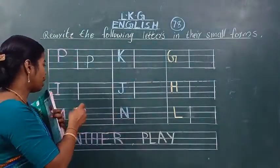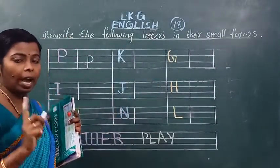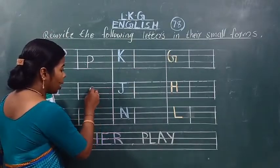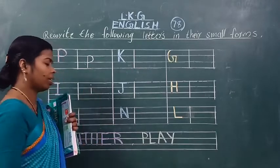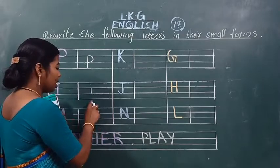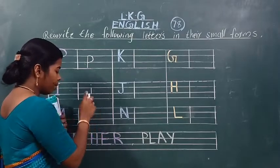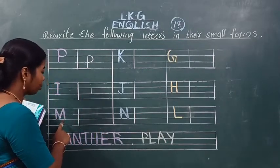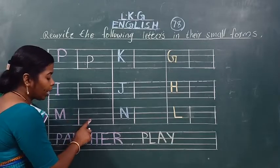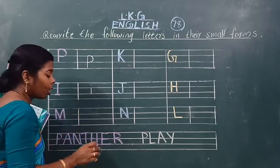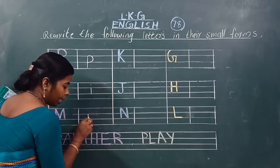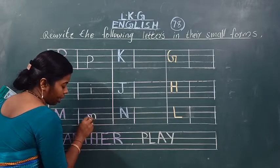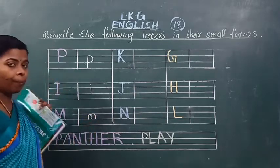The next letter is I. देखो, this is capital letter I. Small letter I कैसे लिखना है? यह दोनों line में मिला के लिखना, फिर dot लगाना है। This is small letter I. The next — which letter is this? This is capital letter M. और इधर हम small letter M लिखेंगे। कैसे लिखेंगे? Standing line बनाना। This is small letter M.